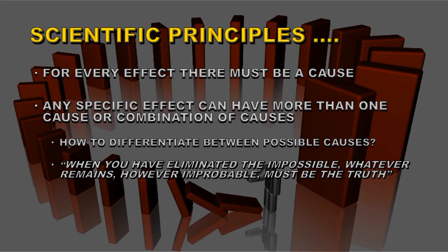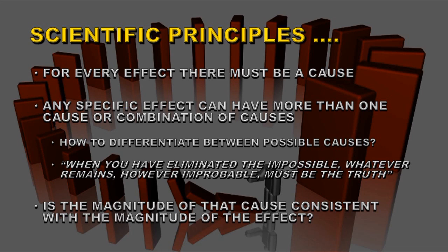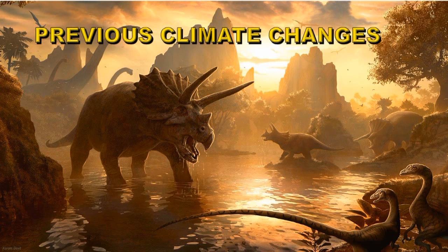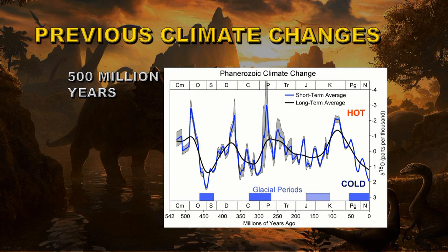But science doesn't stop at qualitative statements. Science is primarily quantitative. So you have to ask the final question: is the magnitude of that cause consistent with the magnitude of the effect that you're seeing? Let's take a look at some previous climates. If we go back over 500 million years, we can see there's been periods of both warm and cold climates on the earth. We've had four glacial periods and four warm periods. One thing to note is over the last 50 million years or so, there's been a steady decline in global temperatures.